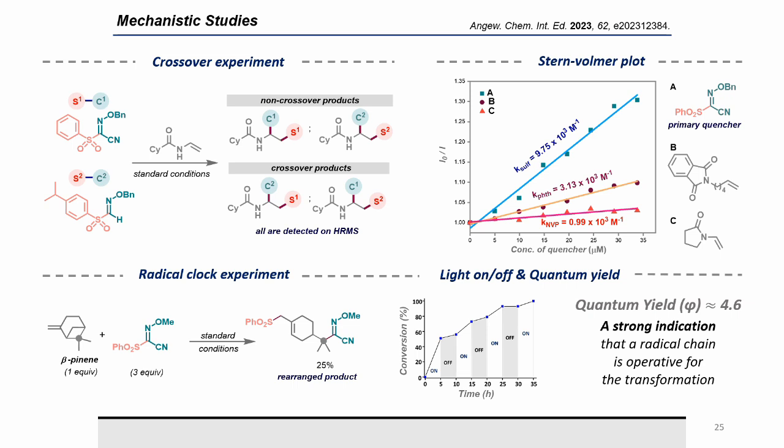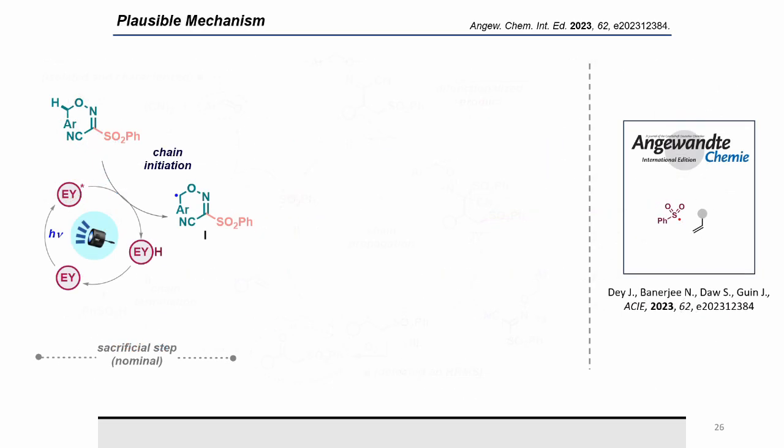During the light on/off experiment, maximum conversion was observed when the light was on, but very sluggish conversion was observed in dark mode, indicating a radical chain operating in the reaction medium. The quantum yield value also supports a radical chain mechanism. With these results in hand, a possible radical chain mechanism for the process has been proposed.